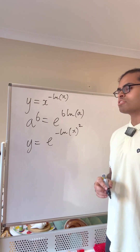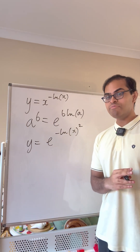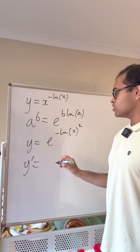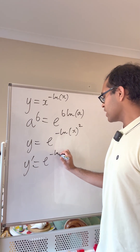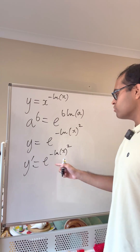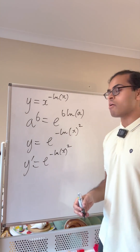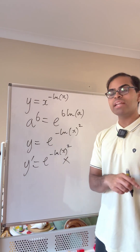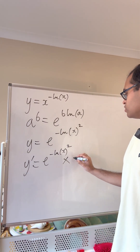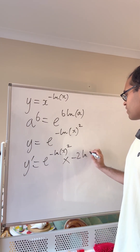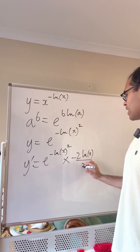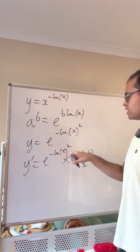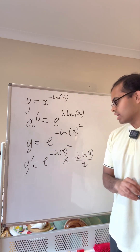To sketch the graph we need to differentiate. Using the chain rule, y prime equals e to the power of minus (log x) squared, times the derivative of minus (log x) squared. The derivative of the outside — e to the power of anything — is e to that thing, times the derivative of minus (log x) squared, which equals minus 2 log x divided by x. That's the chain rule: log x squared is 2 times log x, and the derivative of log x is 1 over x.